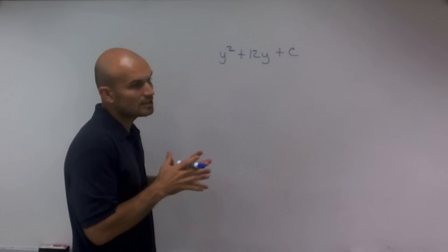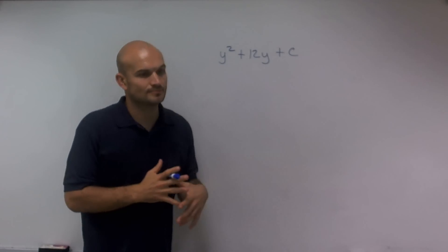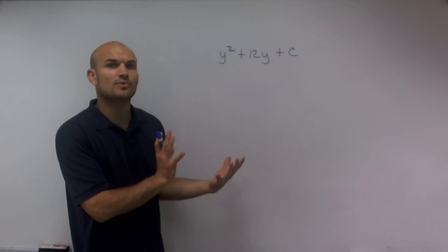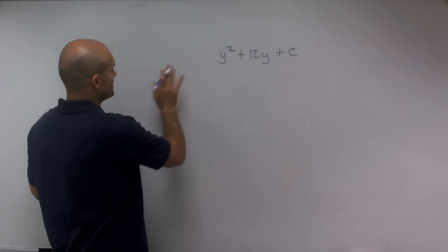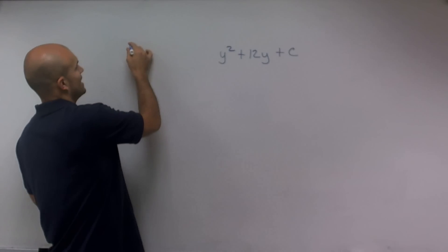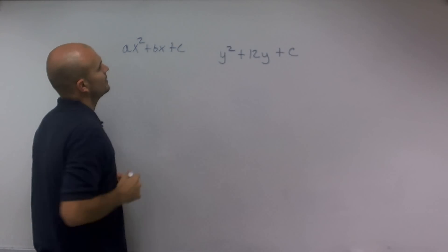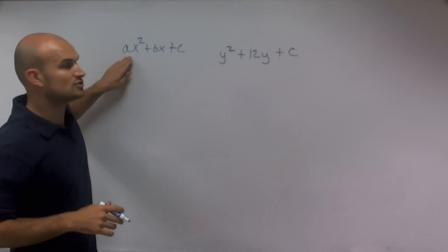So we're going to complete the square, and there's a lot of reasons why we're going to complete the square. But as far as just using the process for completing the square, one thing we want to make sure that we have is a polynomial that's in the quadratic form. And most importantly, we want to make sure that a is going to be 1.